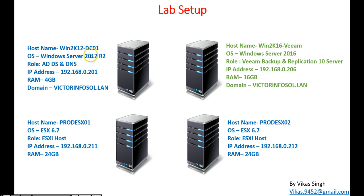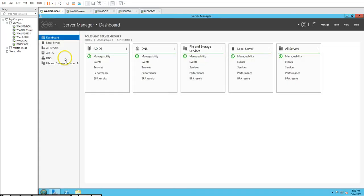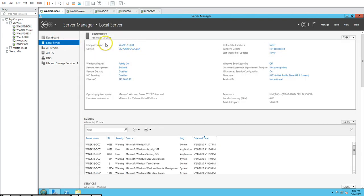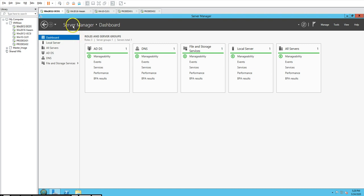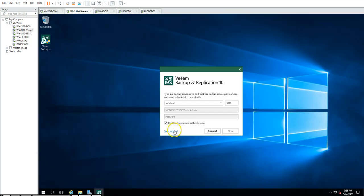The first machine is win2k-dc01, which is my active directory domain controller with DNS running on it. My domain name is victorinfosol.lab. My Veeam server is win2k16-veeam, which is running Veeam backup and replication 10 server and is also joined to my domain. I have two ESXi hosts — prod-esxi01 and prod-esxi02 — both running ESXi 6.7. Let me go ahead and launch the Veeam backup and replication console. You can see it's running version 10.